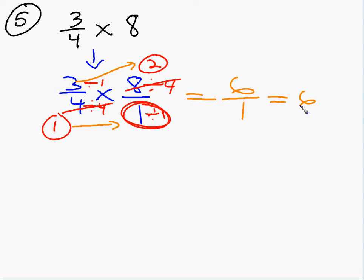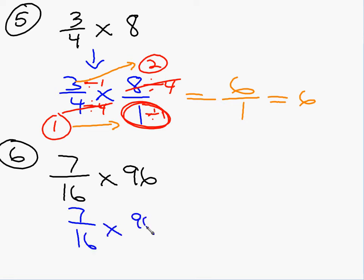Sometimes you'll have bigger, uglier numbers, like 7 sixteenths times 96. We do the same thing. I write this as 7 sixteenths times 96 over 1. What can I divide both 16 and 96 by? There's something bigger than 4. How about 8? If I divide both of these by 8, 16 divided by 8 is 2. 96 divided by 8 is 12.